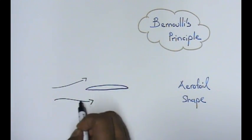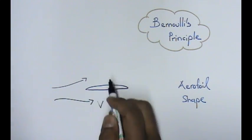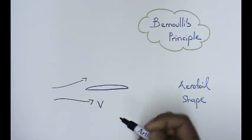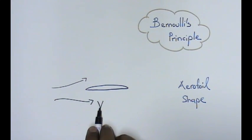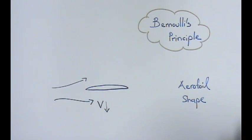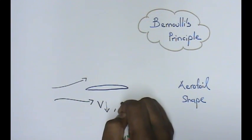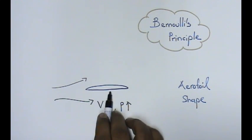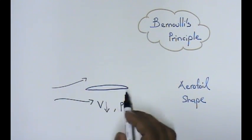What happens here, the air that goes down, the velocity of air, I'm going to use just the alphabet, the velocity of air will be low. But the pressure that is acting at the bottom will be high.